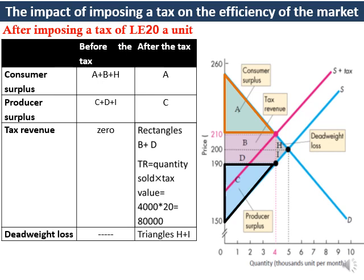Producer surplus declines from area C plus D plus I to just triangle C. This happens for two reasons: producers now sell at a lower price (£190 instead of £200), and they sell a smaller amount (4,000 units instead of 5,000 units), generating lower revenues. A part of this decrease in producer surplus — represented by area D — is transferred to government. Another part — the small triangle I — is lost as deadweight loss.